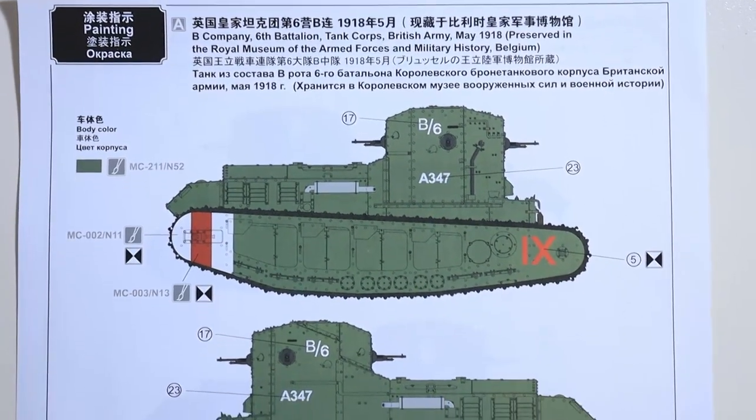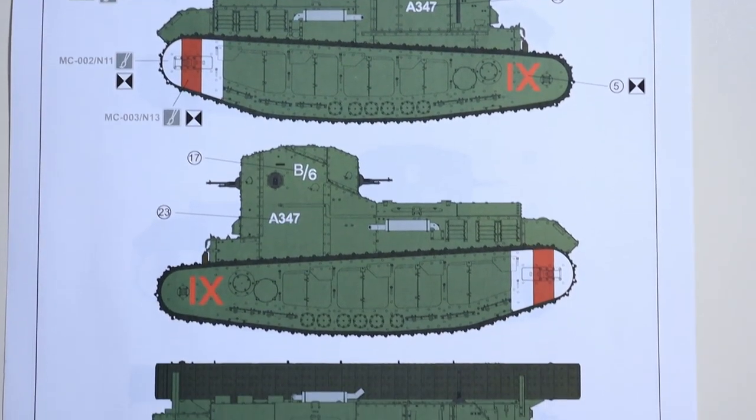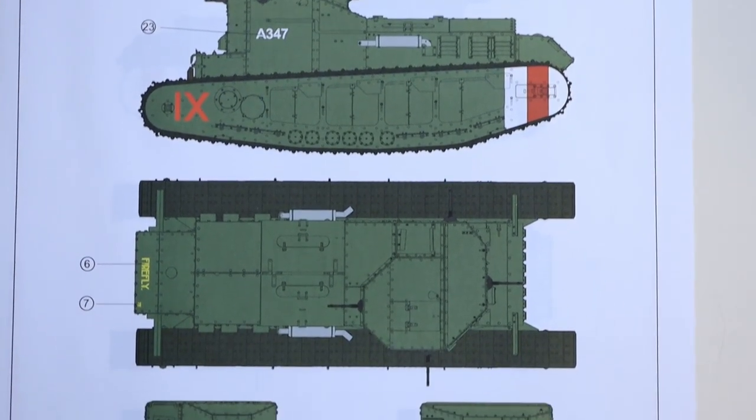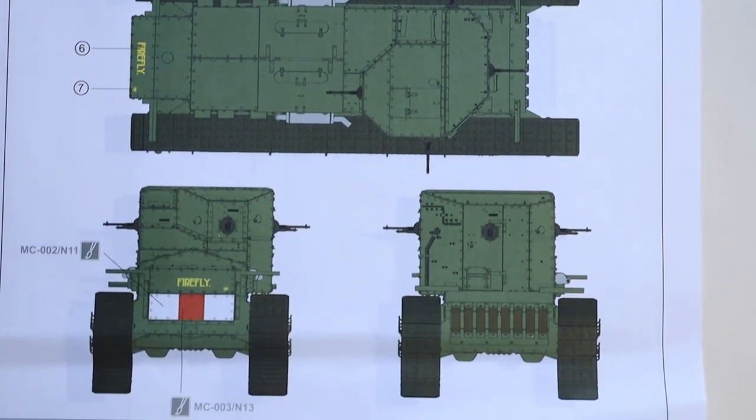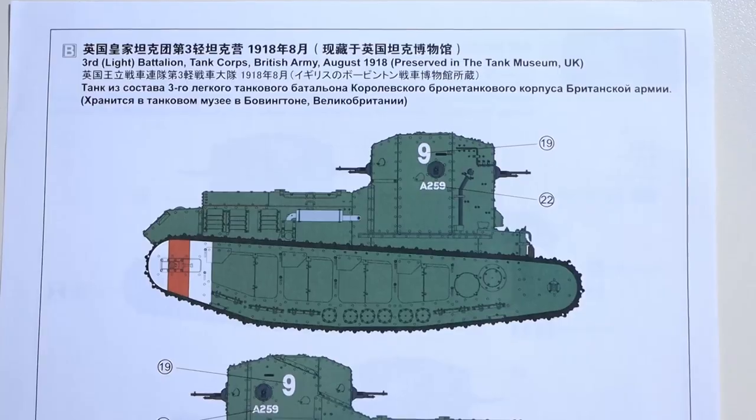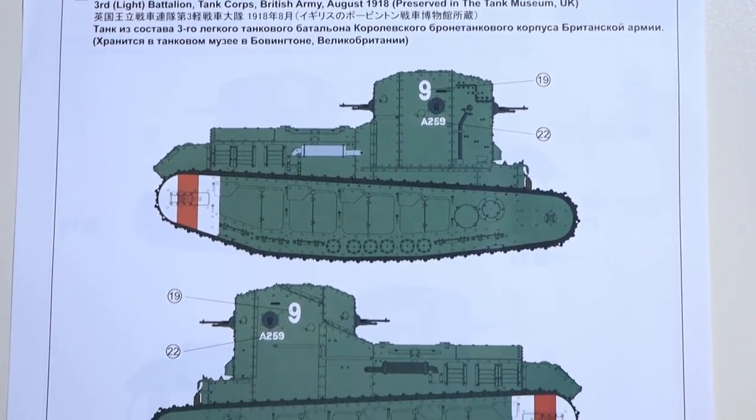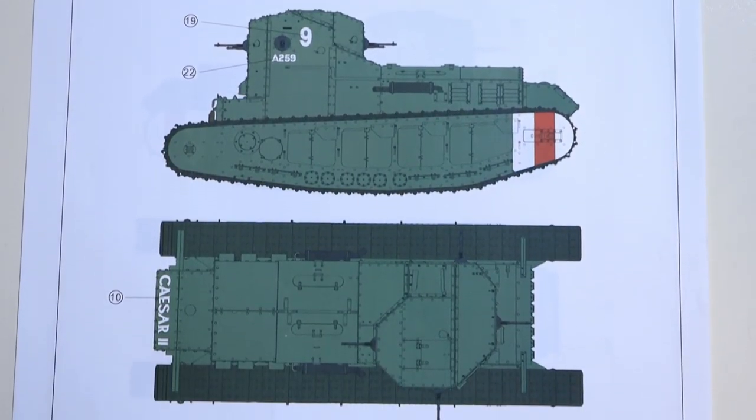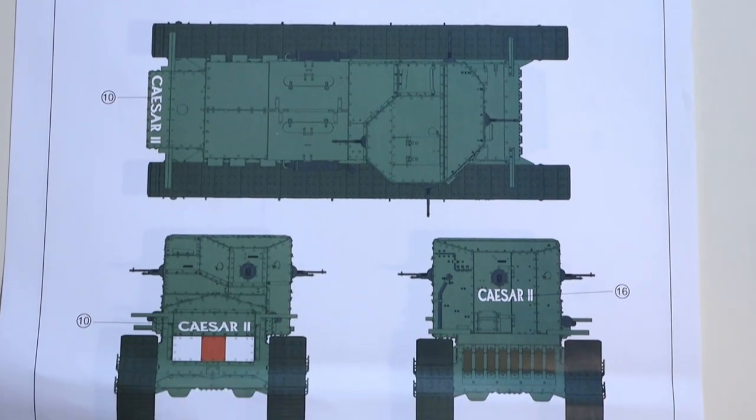And here we go. This is the first paint scheme. It's a British one, May 1918 version, as preserved in the Royal Museum of Armed Forces and Military History in Belgium. And the second one, again, is from the British Army, August 1918, as preserved in the Tank Museum in UK.